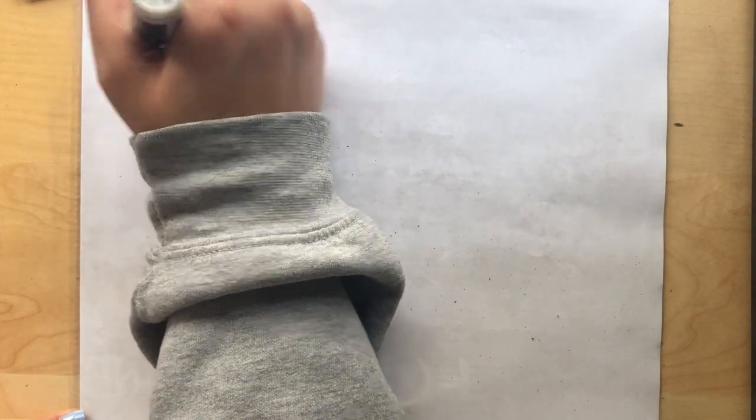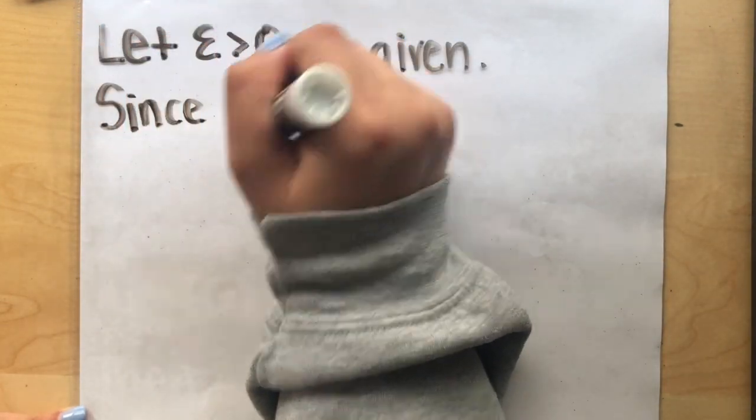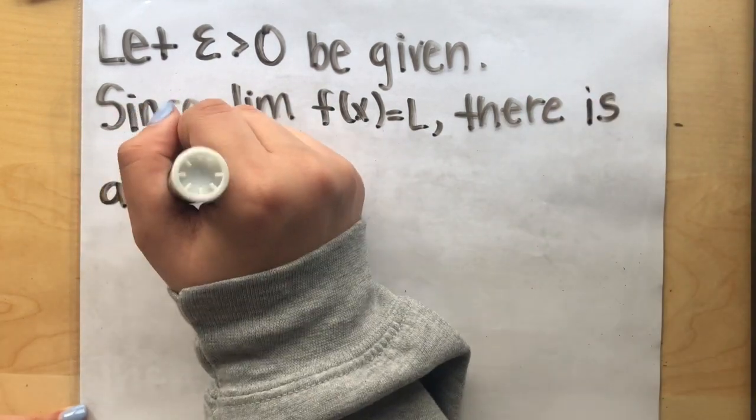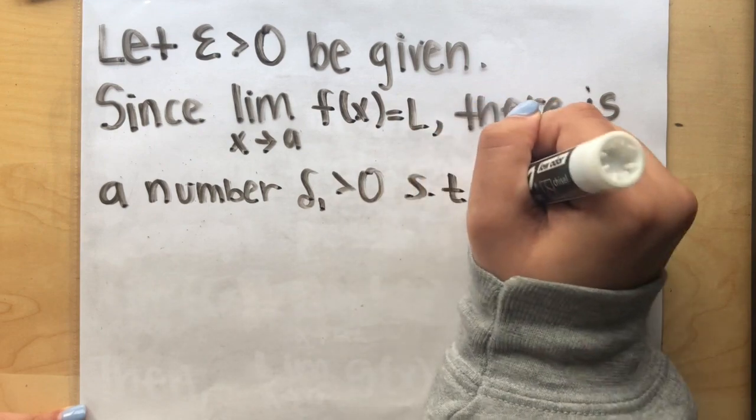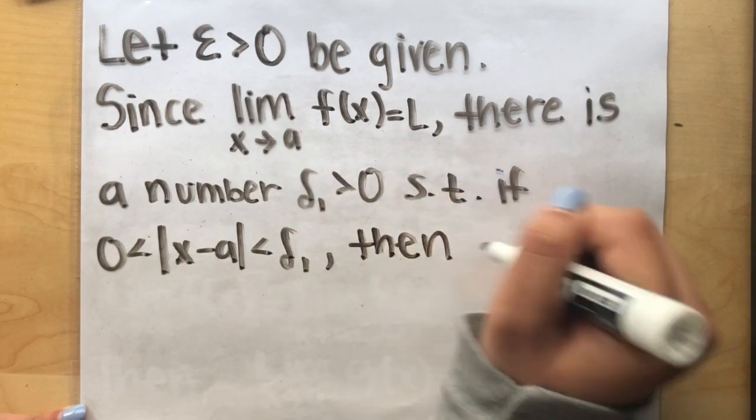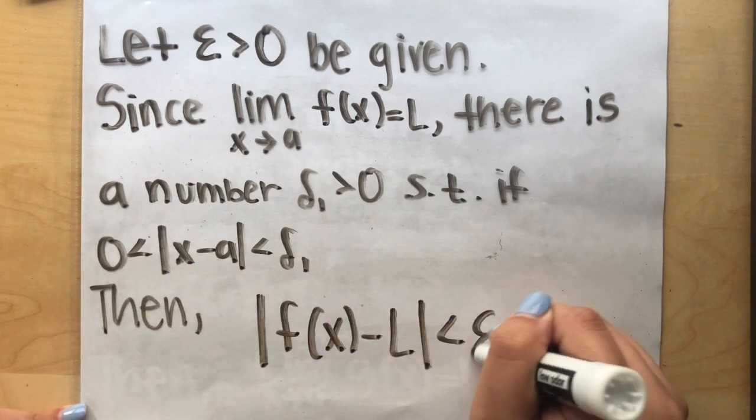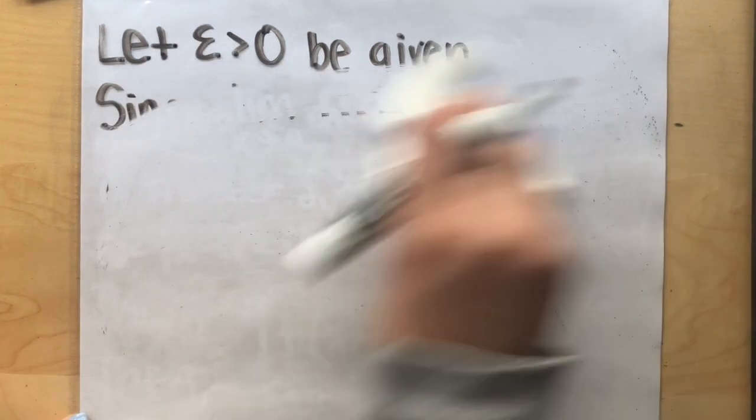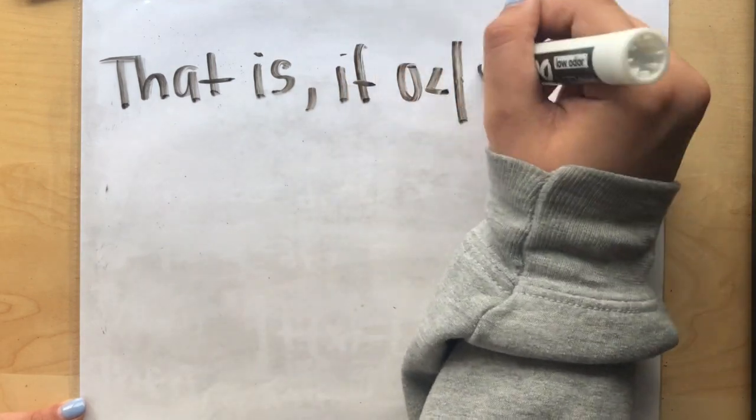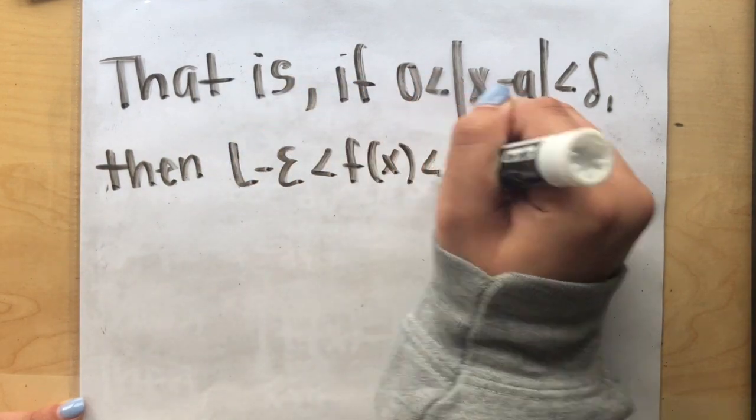Let epsilon be greater than 0 be given. Since the limit of f of x as x approaches a equals L, there is a number delta sub 1 that's greater than 0, such that if 0 is less than the absolute value of x minus a, which is less than delta sub 1, then the absolute value of f of x minus L is less than epsilon, then L minus epsilon is less than f of x, which is less than L plus epsilon.